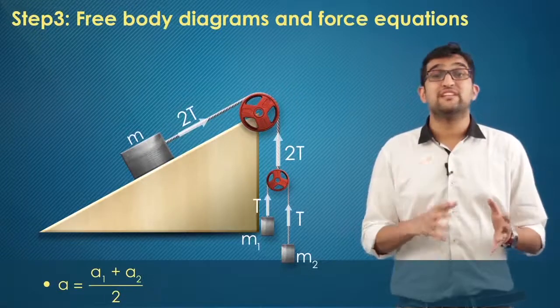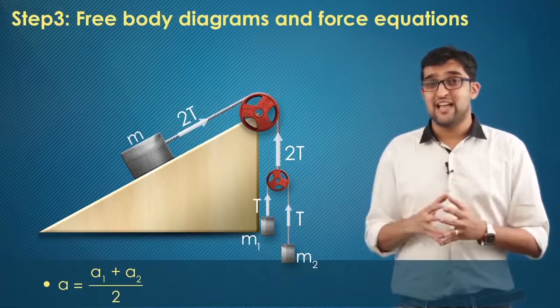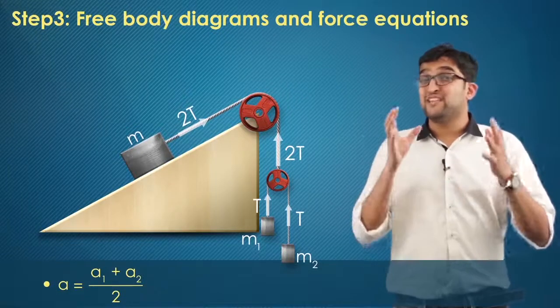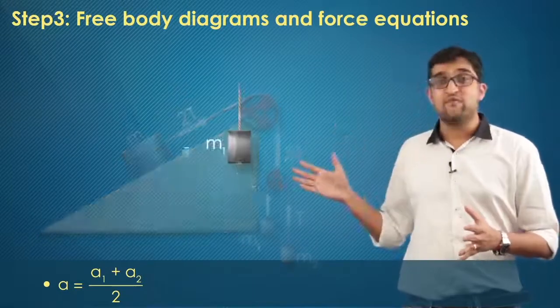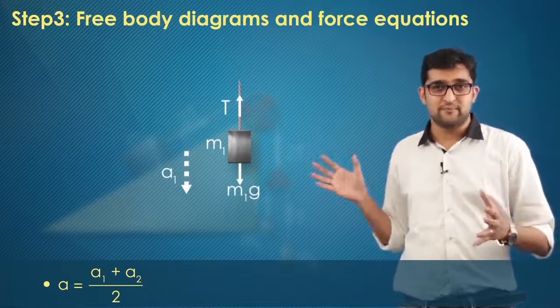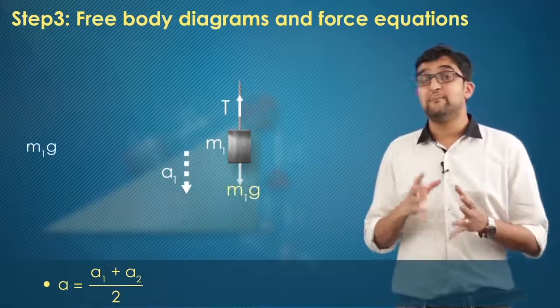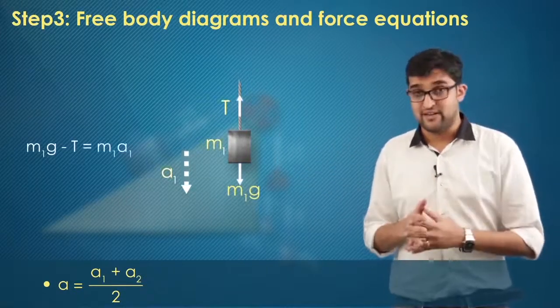Now that we got the relationship between the different accelerations of the objects, I will go into the free body diagrams of each of the objects. Let's start with FBD of M1 here. So with that, if I analyze, I get M1·g minus T equals M1·A1.